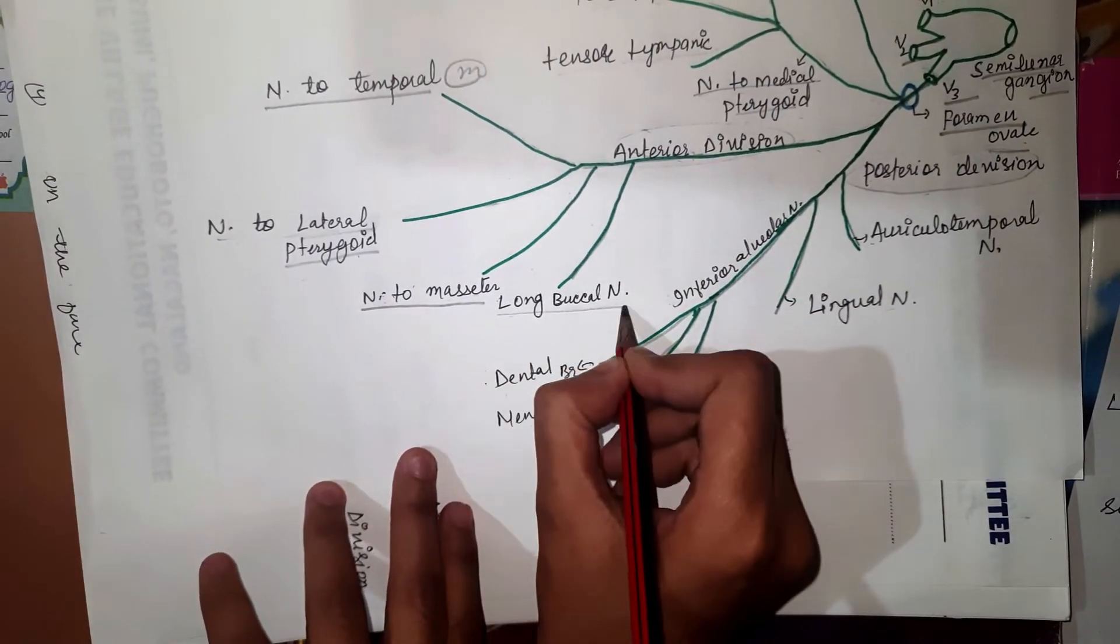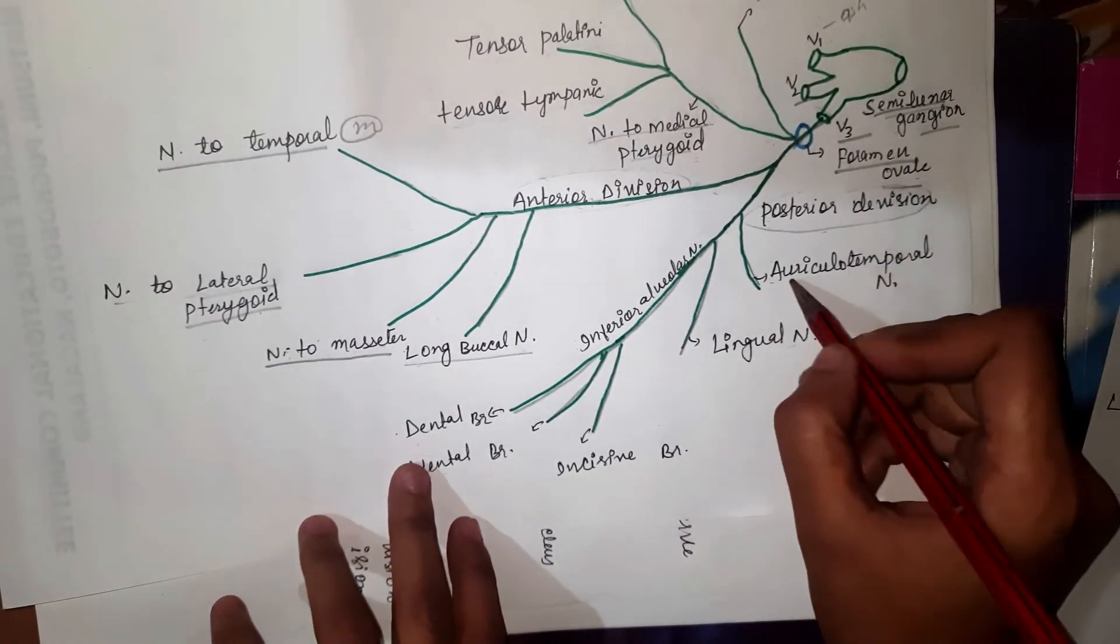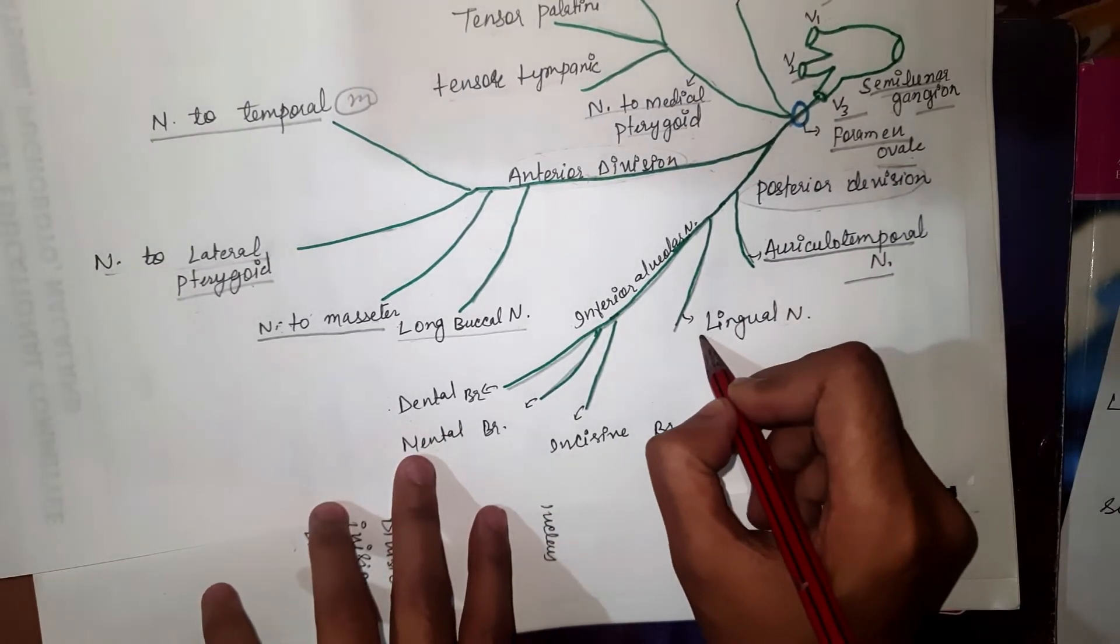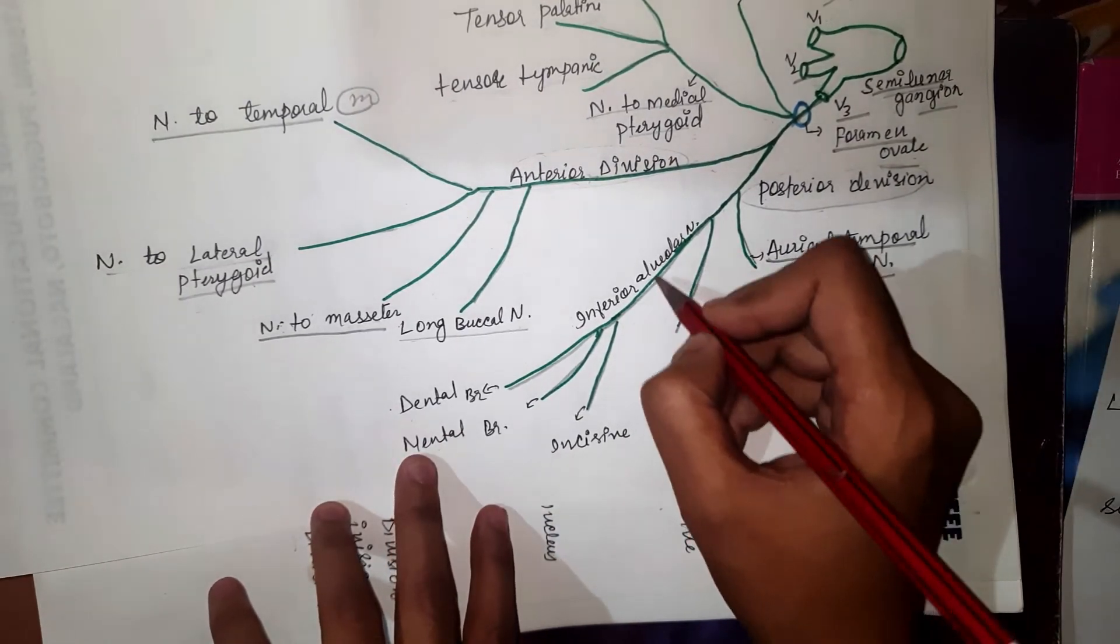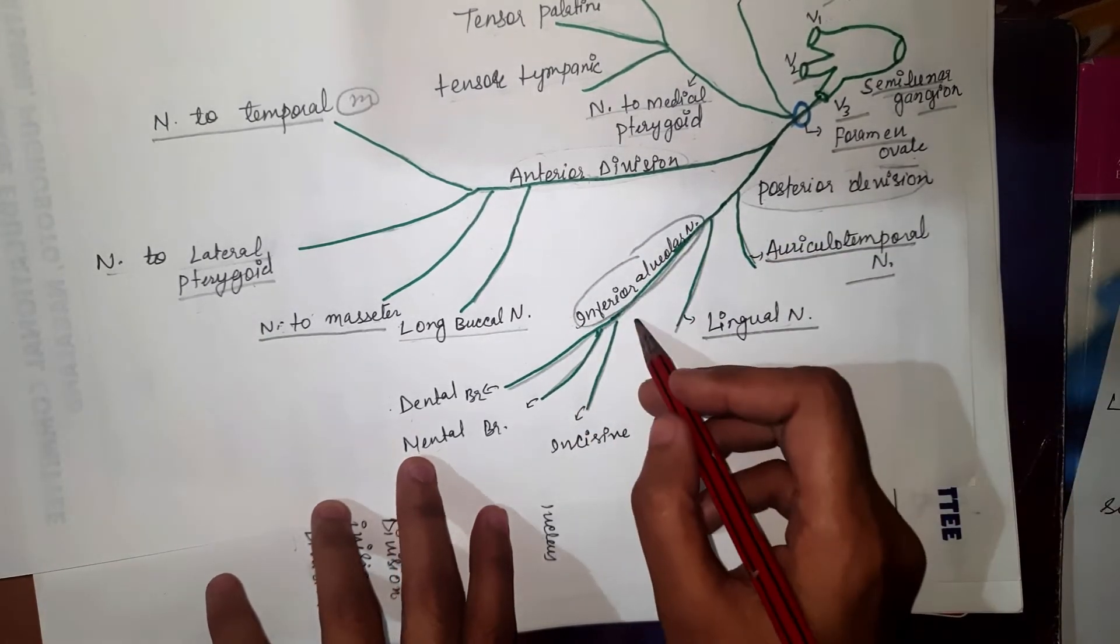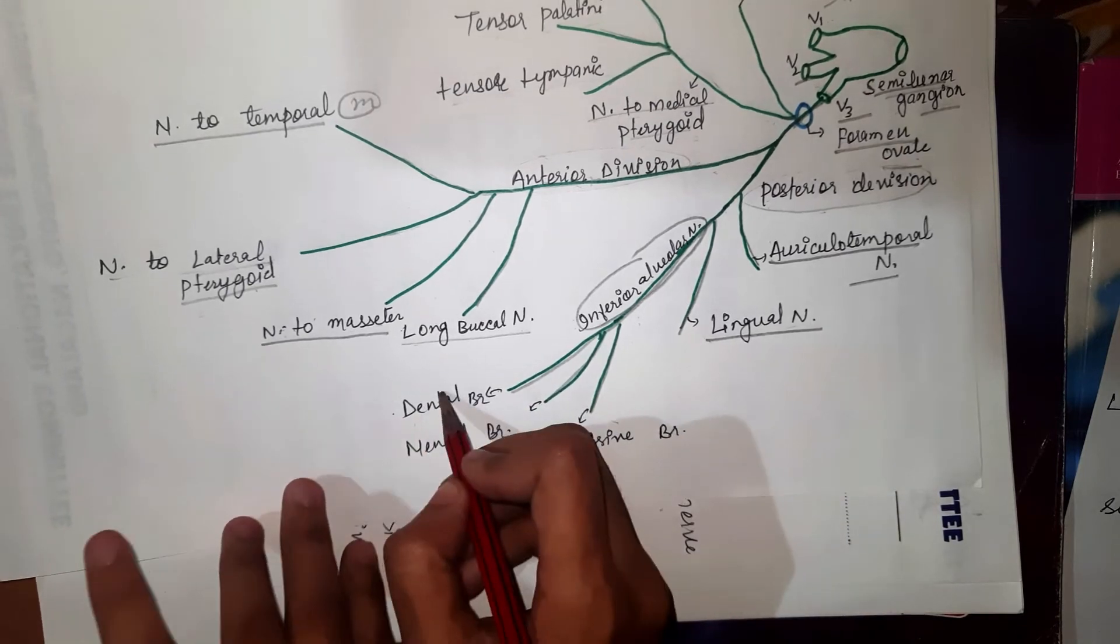In posterior division, the first branch is called auriculotemporal nerve, the second branch is called lingual nerve, and the third branch is called inferior alveolar nerve. Inferior alveolar nerve has further three branches.